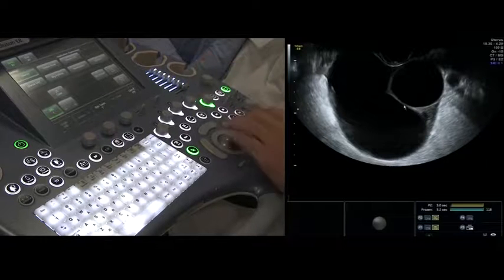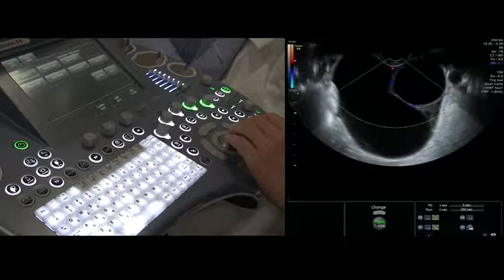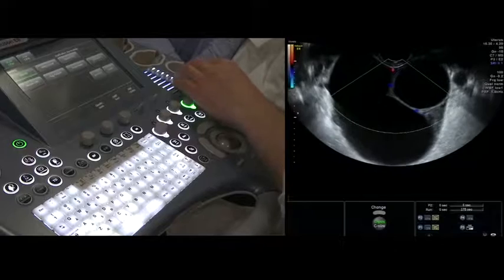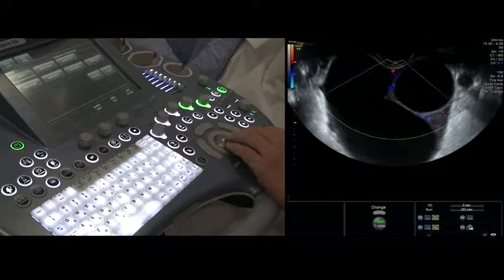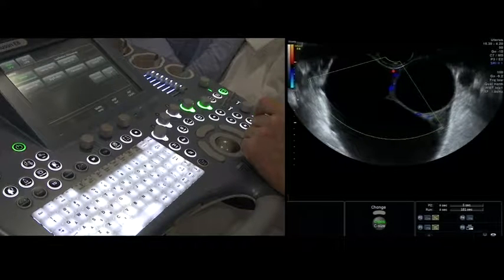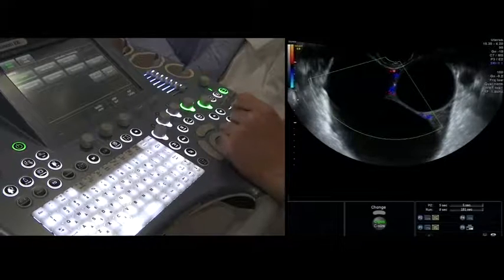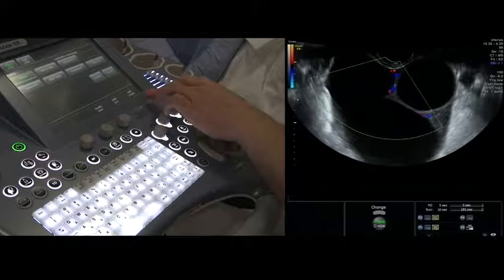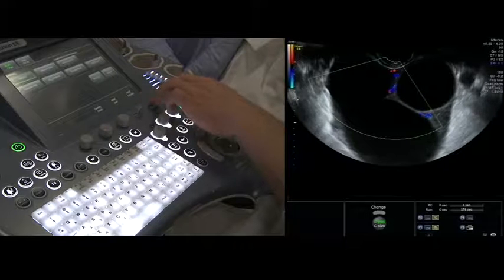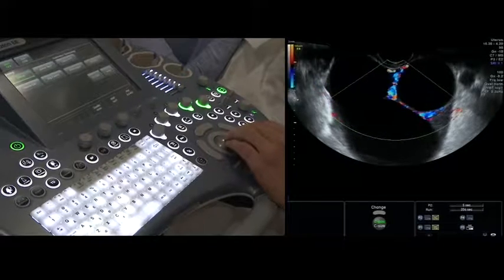To assess the color Doppler, we switch on the color Doppler signal. We focus on the more vascularized region and make sure the settings are okay. Initially, I put the balance on 220, and then we adjust the PRF. PRF is now 1.8. We decrease it to 0.3, and then we see much more abundant flow.